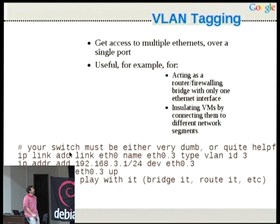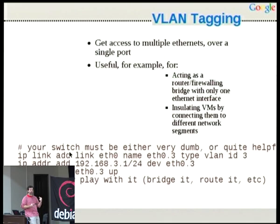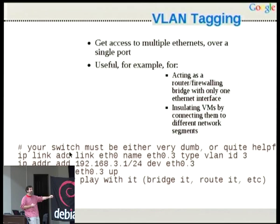So, VLAN tagging. Over a single port we can have many VLANs. We need our switch to cooperate — either it has to be very dumb, or it needs to know about tagging and allow us to trunk. It needs to configure the port as trunking and explicitly allow the VLANs we're going to use, or allow all of them. You can easily add a link: 'ip link add link eth0 name eth0.3 type vlan id 3'. You can create an interface in /etc/network/interfaces, or do it manually, then add an IP on that interface and bring it up.